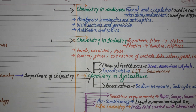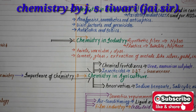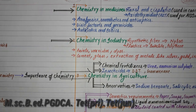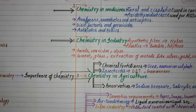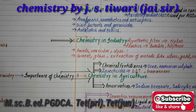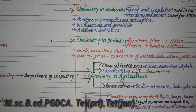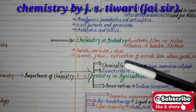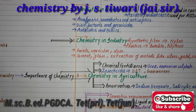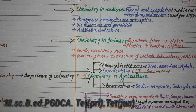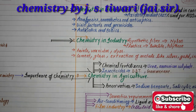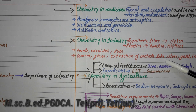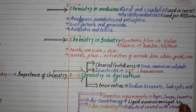Polythene is very important. Paints — you have to use paints; it's chemistry. Dyes — this is also chemistry. Cement, and metals like silver, gold, and iron.